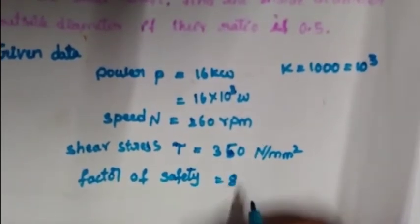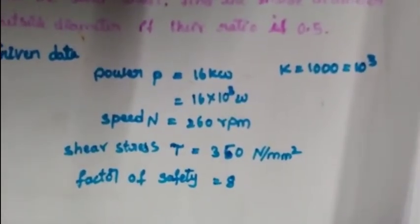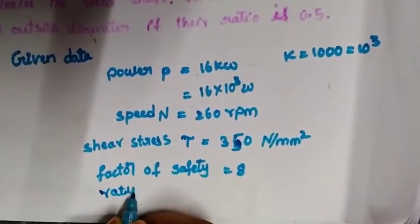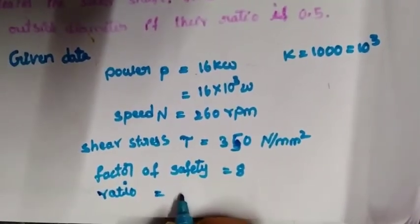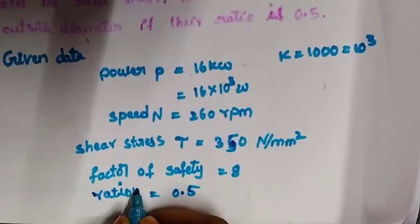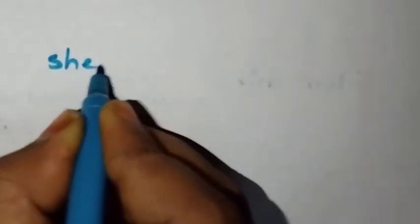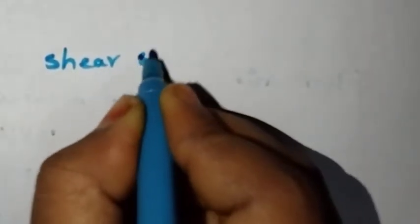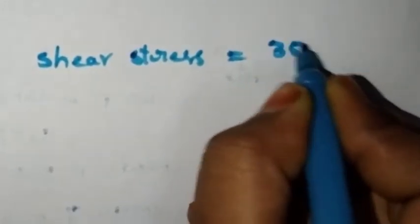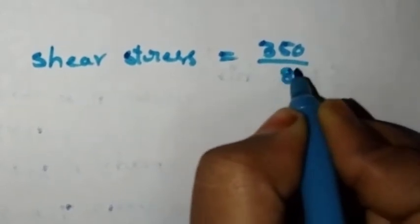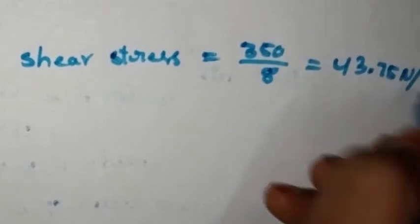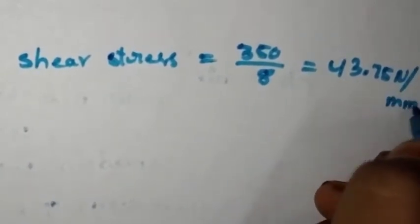Factor of safety is equal to 2. K is equal to 0.5. Shear stress is equal to 350 by 8, which gives the answer as 43.75 Newton per mm square.